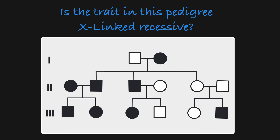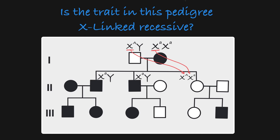With those ideas in mind, let's take a look at this practice pedigree to see if we can tell if the trait is inherited in an X-linked recessive manner. Starting at the top and filling in the genotypes we know: the mother in the first generation is affected, meaning she's homozygous recessive, and the male is unaffected, so he's carrying the dominant X-allele. This means all of the sons in this generation must be affected, and all of the daughters are heterozygous and unaffected — which checks out in this pedigree.